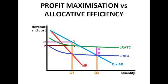A much better situation for the economy as a whole would be allocative efficiency, which would occur if the monopoly produced at Q2 — the stage at which average revenue equals marginal cost. That would mean producing a lot more and selling at a much lower price. However, the monopoly would actually make a loss here of AB, so the government would have to subsidise it if it wanted the monopoly to produce this much. This loss occurs since average total cost would be greater than average revenue.